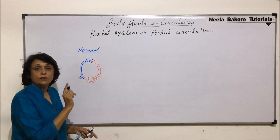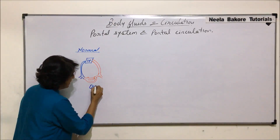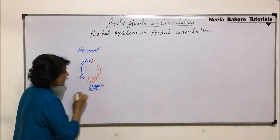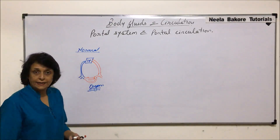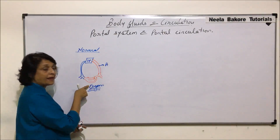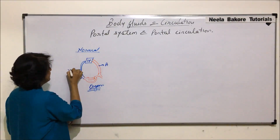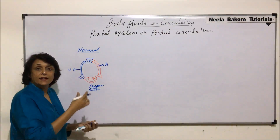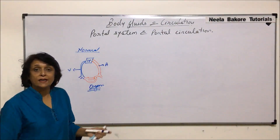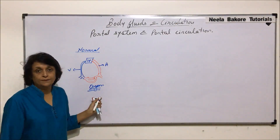This is the set of capillaries which is in that organ where the blood has to be supplied. So there is an artery which is supplying the blood, and there is a vein which is bringing the blood back to the heart. This is normal.